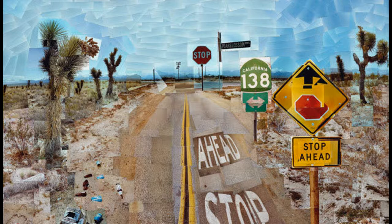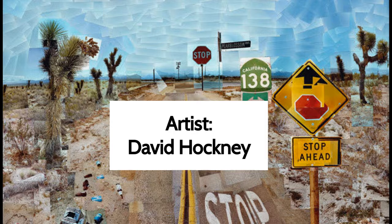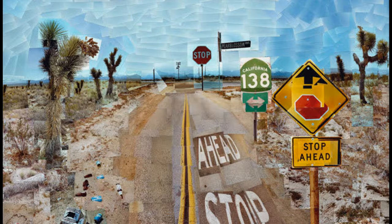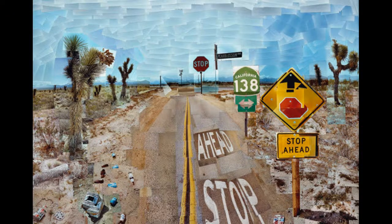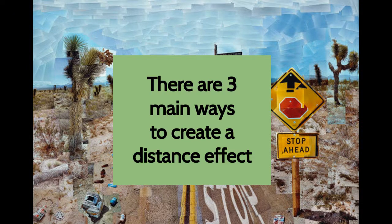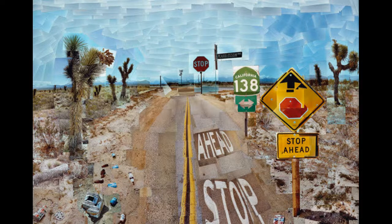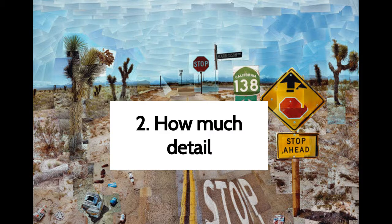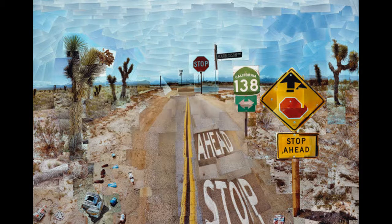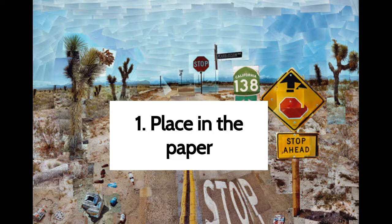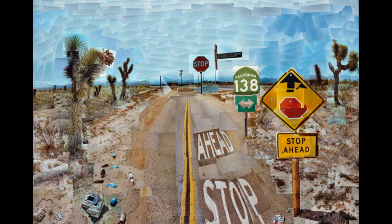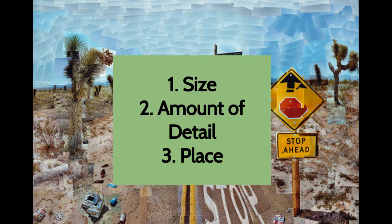How do artists make distance in their landscapes? Let's look at this example from David Hockney again to find out. There are three main ways that artists can create the sense of distance: the size of the things in the landscape, the amount of detail that is on the items, and the location or placement on the page.